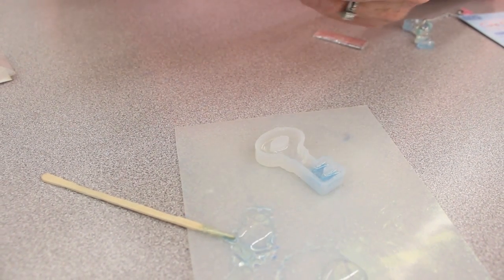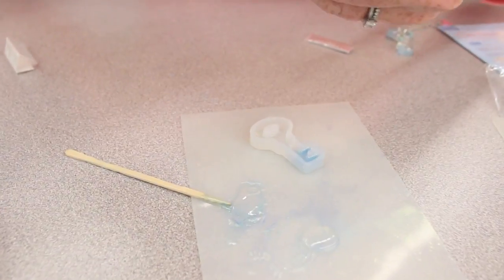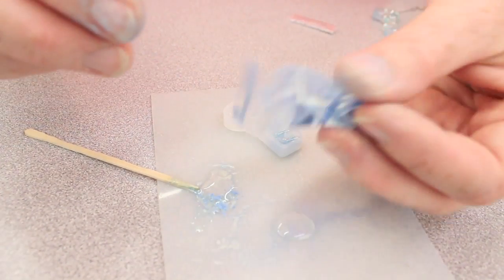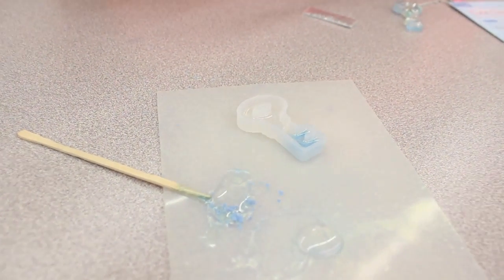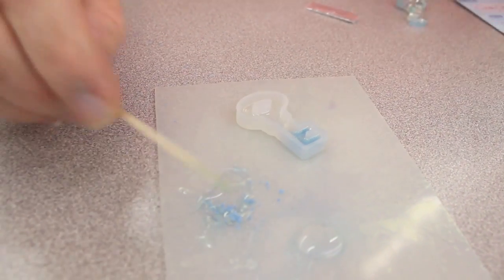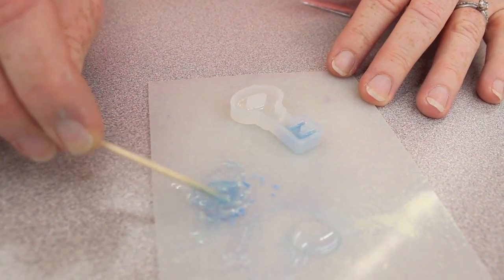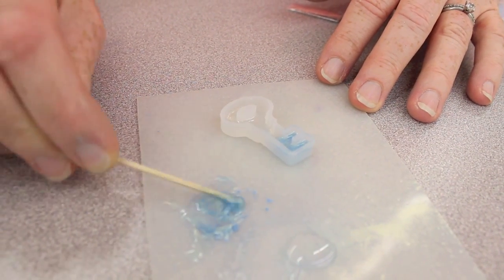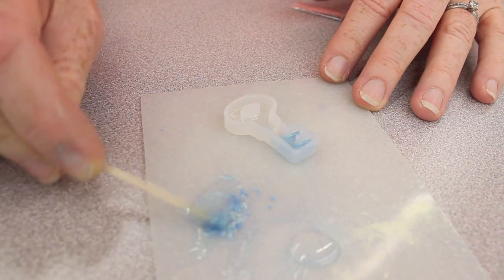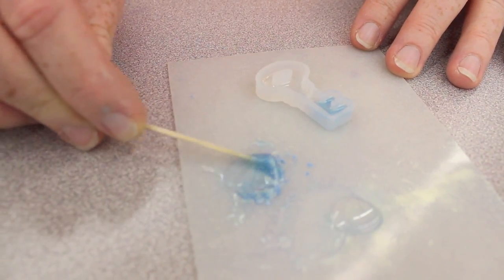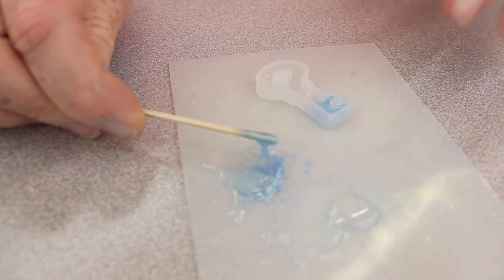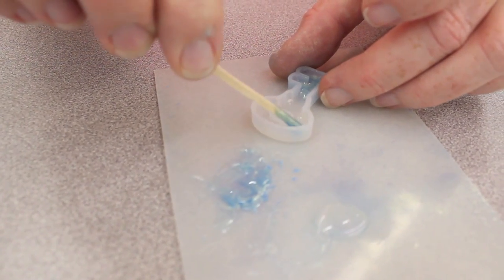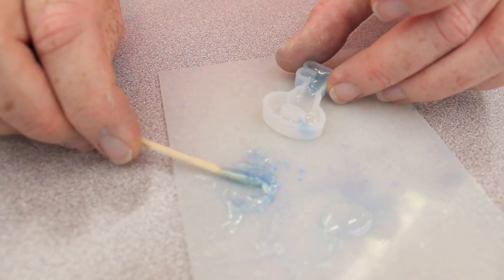Pour a little more blue on there. Again, just a little bit is all that you need. Mix. And since this is just a tiny little bit, you see when I'm mixing it, I'm going in kind of one direction, it's not creating a lot of bubbles. So that's good. Again, if it did create bubbles, you could always take a pen and pop them.